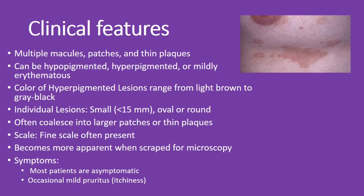The clinical features of Tinea versicolor include multiple macules, patches, and thin plaques on the skin. These can be hypopigmented, hyperpigmented, or mildly erythematous. Hyperpigmented lesions may range from light brown to gray-black. Individual lesions are usually small, less than 15 mm, and can be oval or round. They often merge into larger patches or thin plaques, and you'll often find fine scaling that becomes more apparent when scraped.